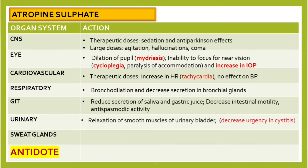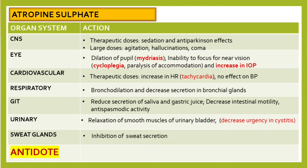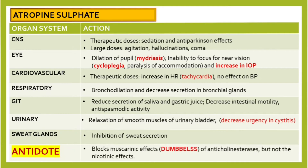In the urinary system, atropine causes relaxation of the smooth muscles of the urinary bladder, decreasing urgency in cystitis. In sweat glands, it causes inhibition of sweat secretion. Atropine is also used as an antidote in cases of poisoning by anticholinesterases — it blocks the muscarinic effects but does not remove the nicotinic effects.